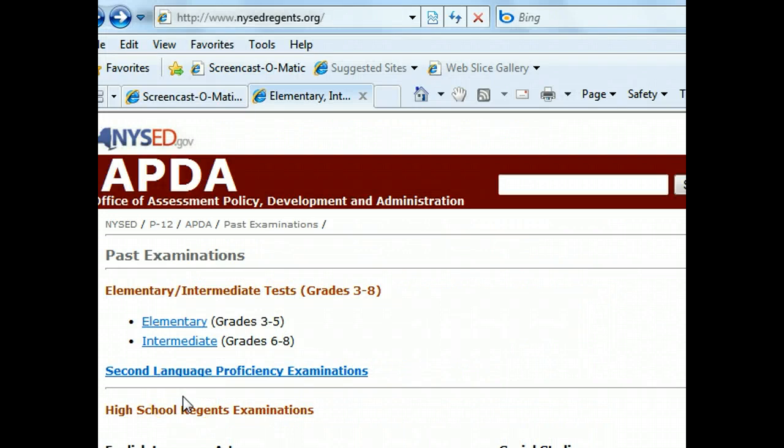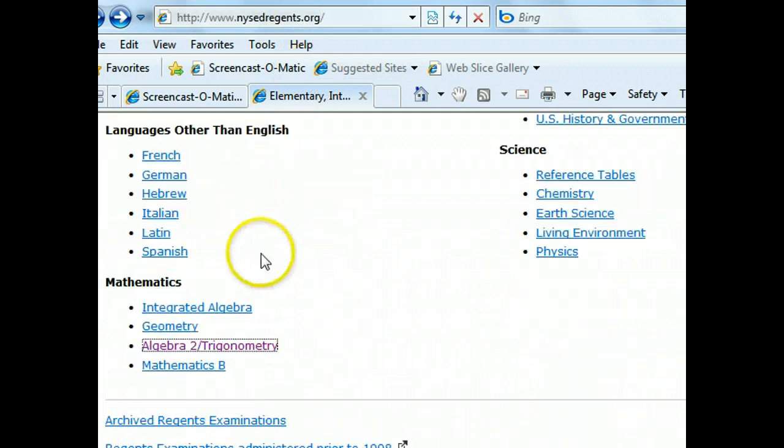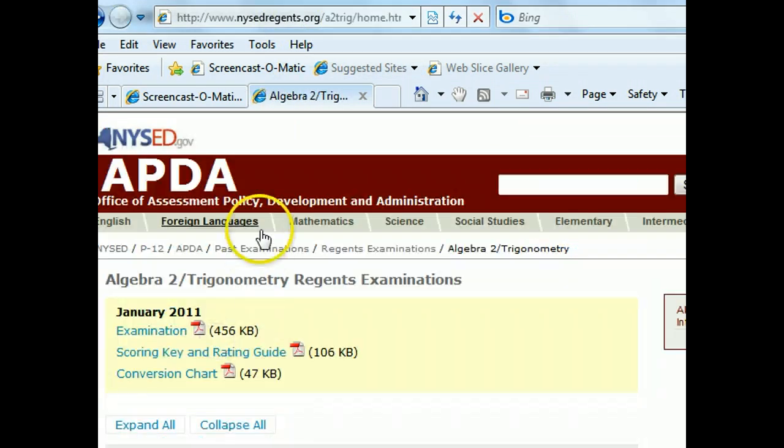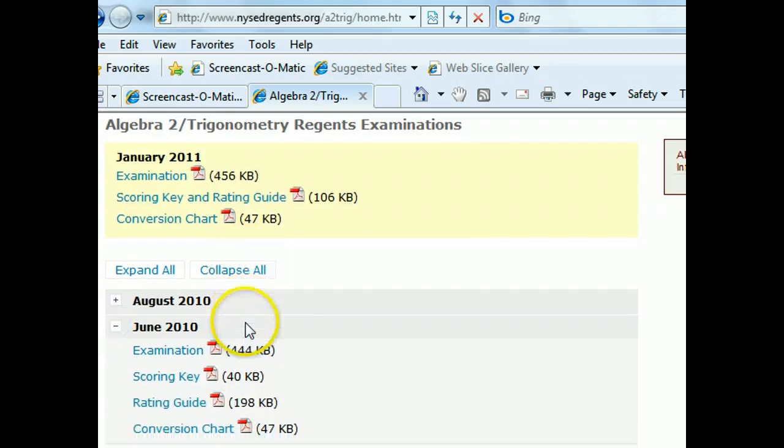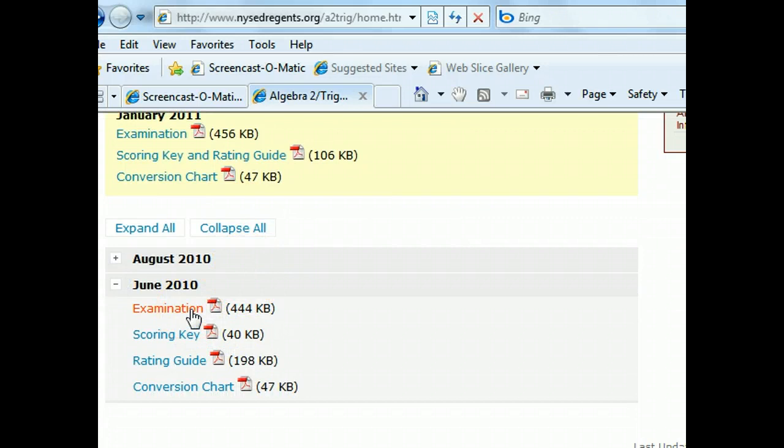Now, the ideal way for you to watch this video is to first do the test yourself, which you can get for free online. You go to www.nysedregions.org and you go down to Algebra II Trigonometry. Click here for June 2010 and click here to download the examination and you get the scoring key and an explanation of how they graded it and the scaling.